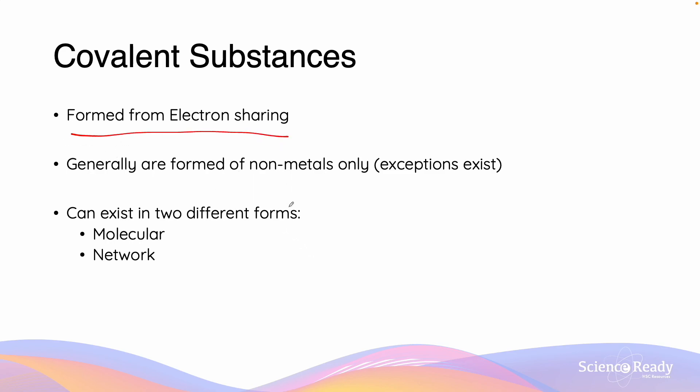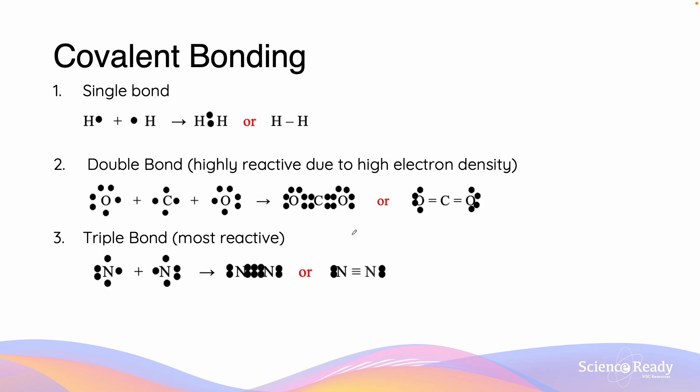Generally, covalent substances are formed from the sharing between non-metals only, however some exceptions do exist. Covalent substances can exist in two forms. They exist as molecular or network type substances. There are also three different types of covalent bonds which we will learn.